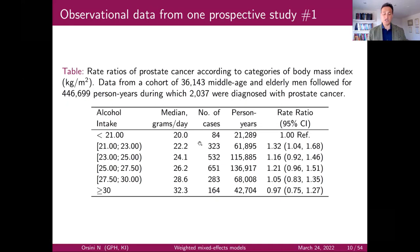What we are modeling in dose-response meta-analysis is a measure of effect as a function of X — the quantitative factor — which is a typical value within each category.